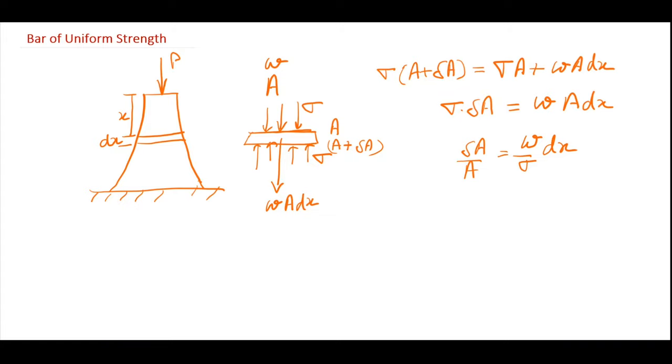So integrating both sides, I will get log base e of A is equal to small w by sigma x plus constant. To find out this constant, we have to take the boundary condition into consideration, that is at top, that is when x is equal to 0, area of cross-section is A naught.